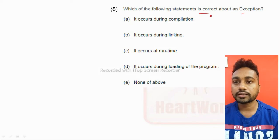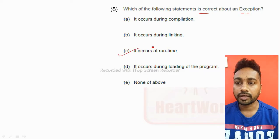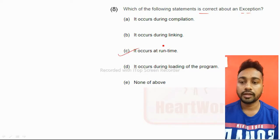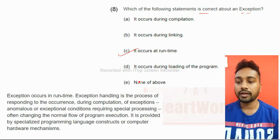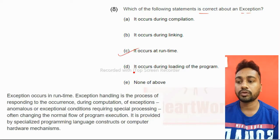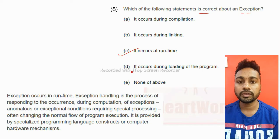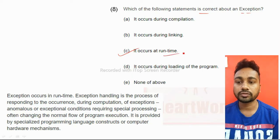Which of the following statement is correct about exceptions? Exceptions occur at runtime. It occurs when computation or execution happens. Exception handling is the process of responding to the occurrence during computation or execution. So runtime it will occur, exception.